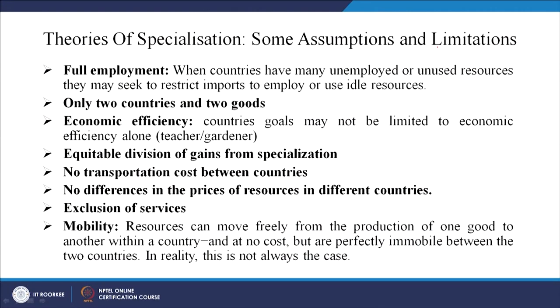Both Adam Smith and Ricardo advocated specialization. What are the assumptions and limitations of these theories? First, they assume full employment. When countries have many unemployed or unused resources, they may seek to restrict imports to employ idle resources — this assumption may not hold. Second, the theory only considers two countries and two goods (like Ghana, South Korea, rice, and cocoa), but in reality there are multiple countries and goods, so results may look different.